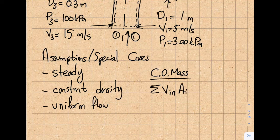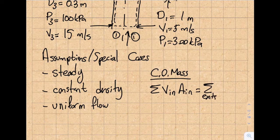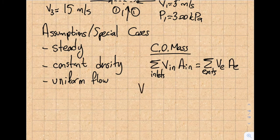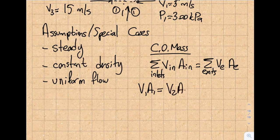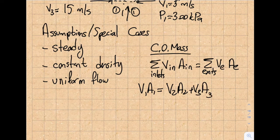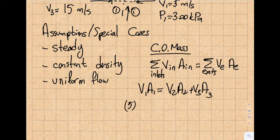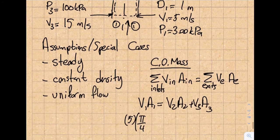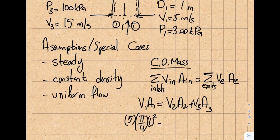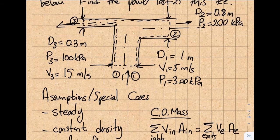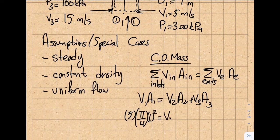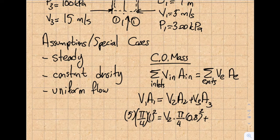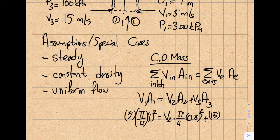So the inlet will equal the exits. Inlet is only one: v1·A1 equals v2·A2 plus v3·A3, those are the two exits that I have. v1 is given as 5, A1 is given as π/4 times 1 squared, equals v2—which is what I'm being asked to find—times π/4 times 0.8 squared, plus v3 which is given to me as 15, times π/4 times 0.3 squared.